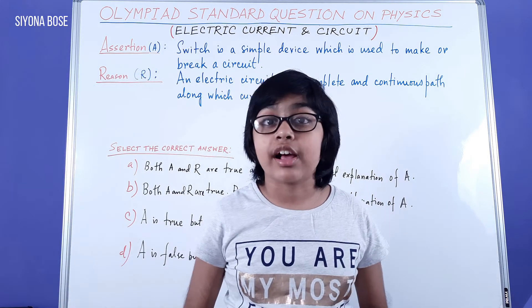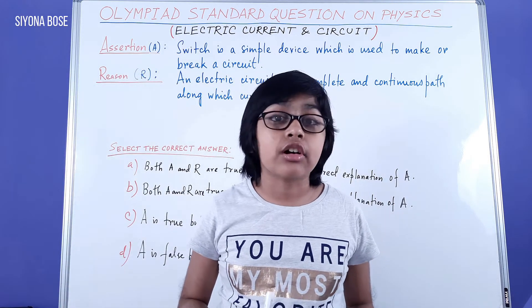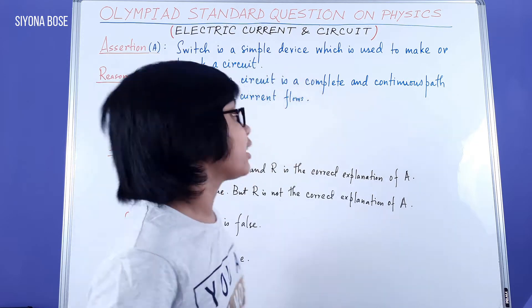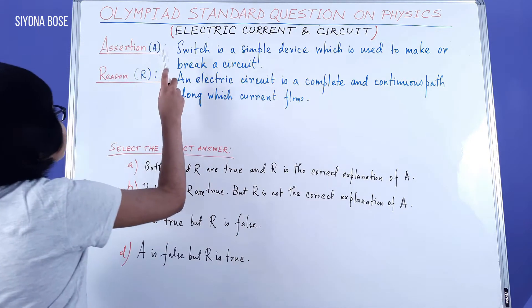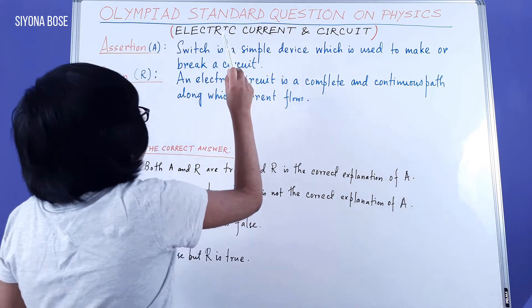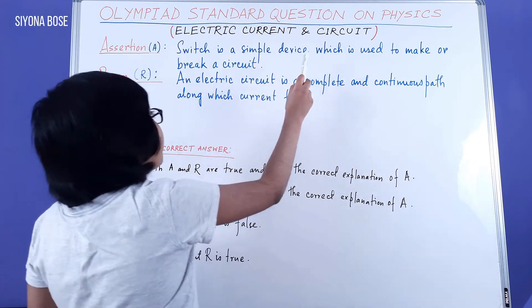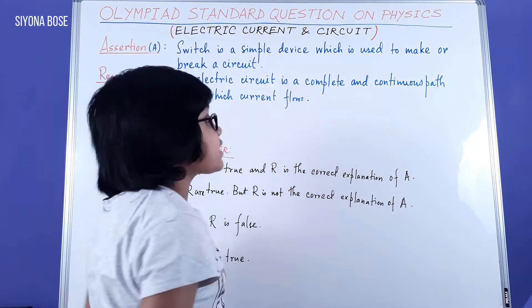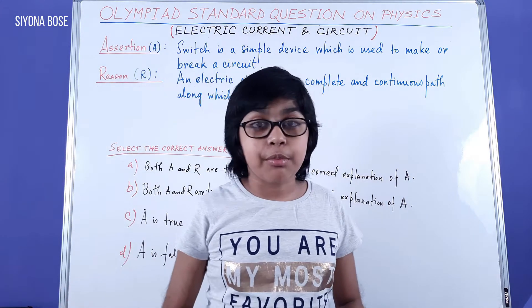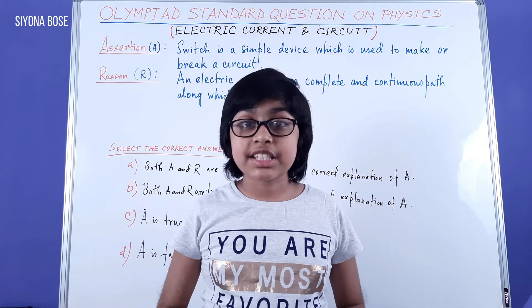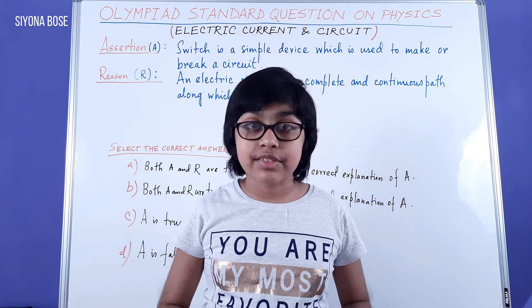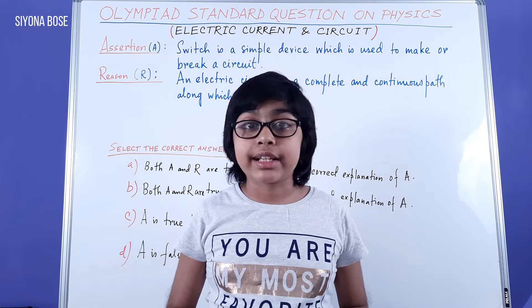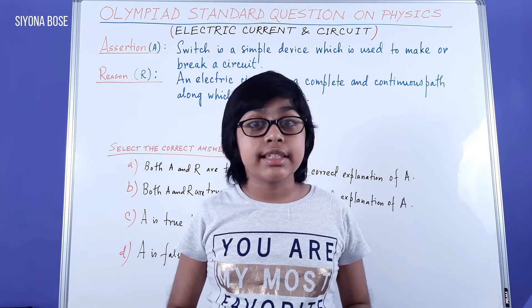So now we have to analyze whether A and R are true, or one of them is wrong, or something like that. Now let's see our assertion first. A switch is a simple device which is used to make or break a circuit. This statement is completely true because according to the definition of the switch, it is a simple device that is used to make and break the circuit.